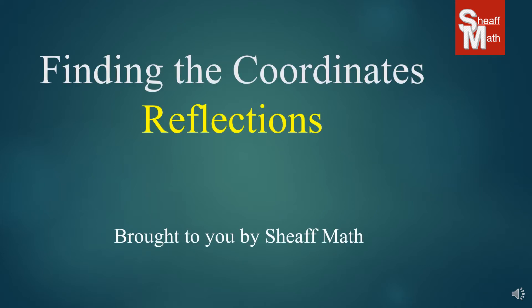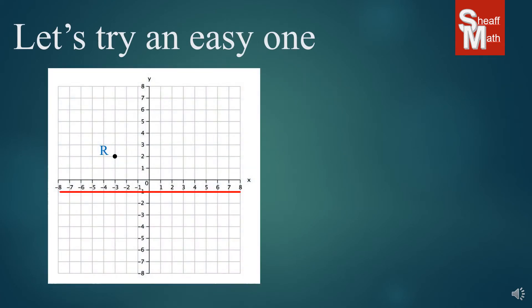Hello and welcome back to Sheaf Math. Today we're going to be learning about reflections and finding coordinates of reflections of different shapes. Let's start off with an easy one. Suppose that you have a graph like this and you have a point R and there's this red line down there below, and you're asked to reflect point R across the red line. Now the red line happens to be y equals negative 1. Sometimes you will be asked to do it across an actual line in slope-intercept form.